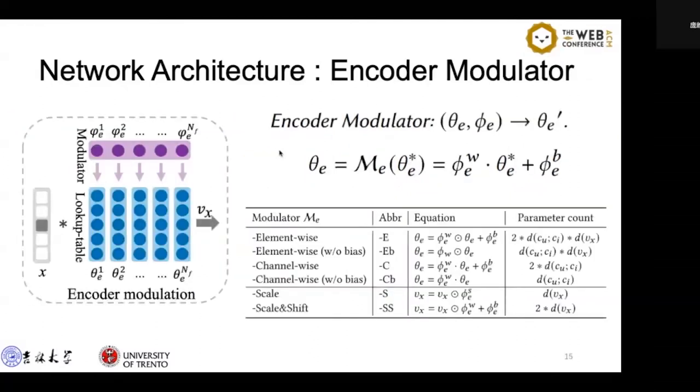To achieve the transfer of pre-trained knowledge into meta-training, we design an encoder modulator. It modulates the pre-trained network parameters in units of single features so that it can adapt to the meta-training environment while avoiding the influence of other random data.